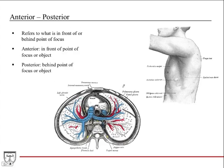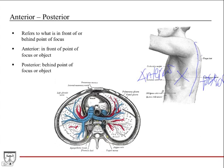Anterior and posterior — you need a point of focus. This is a side view or lateral view of the body. Anterior is in front of the person, and posterior is behind. The spine is in the posterior part of the body; the chest wall is in the anterior part. In a cross-section of the chest, the heart is anterior to the thoracic vertebrae. The aorta is also anterior to the thoracic vertebrae, and the vertebrae is posterior to the aorta.